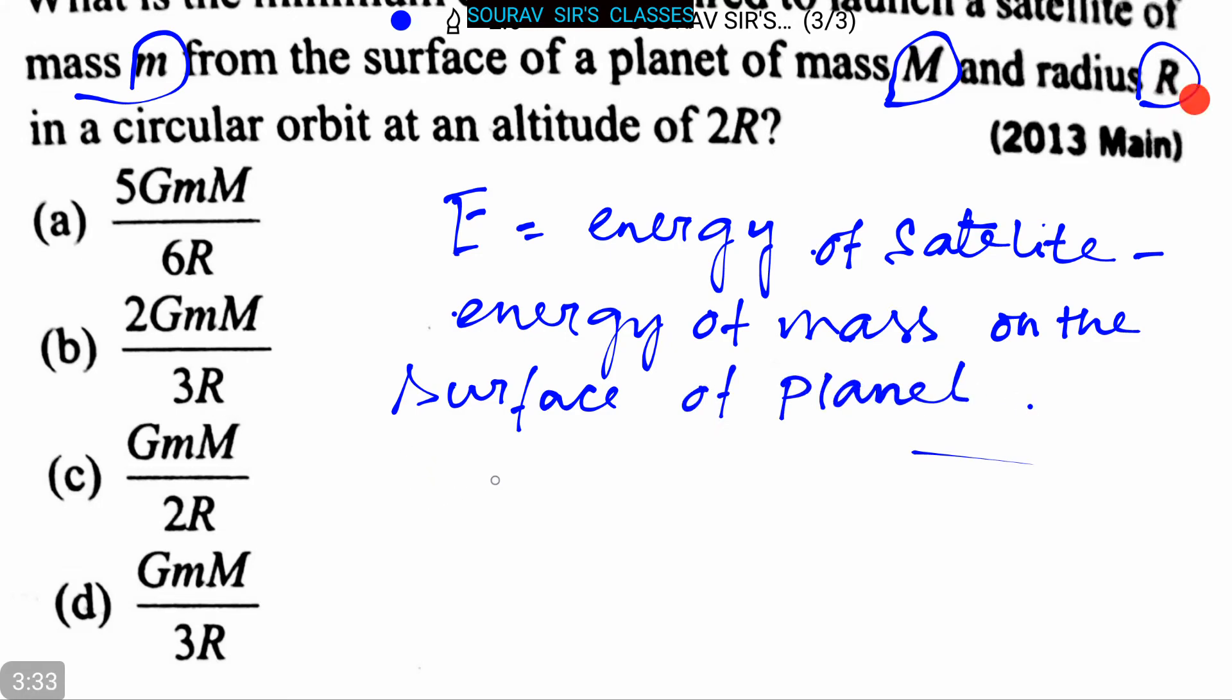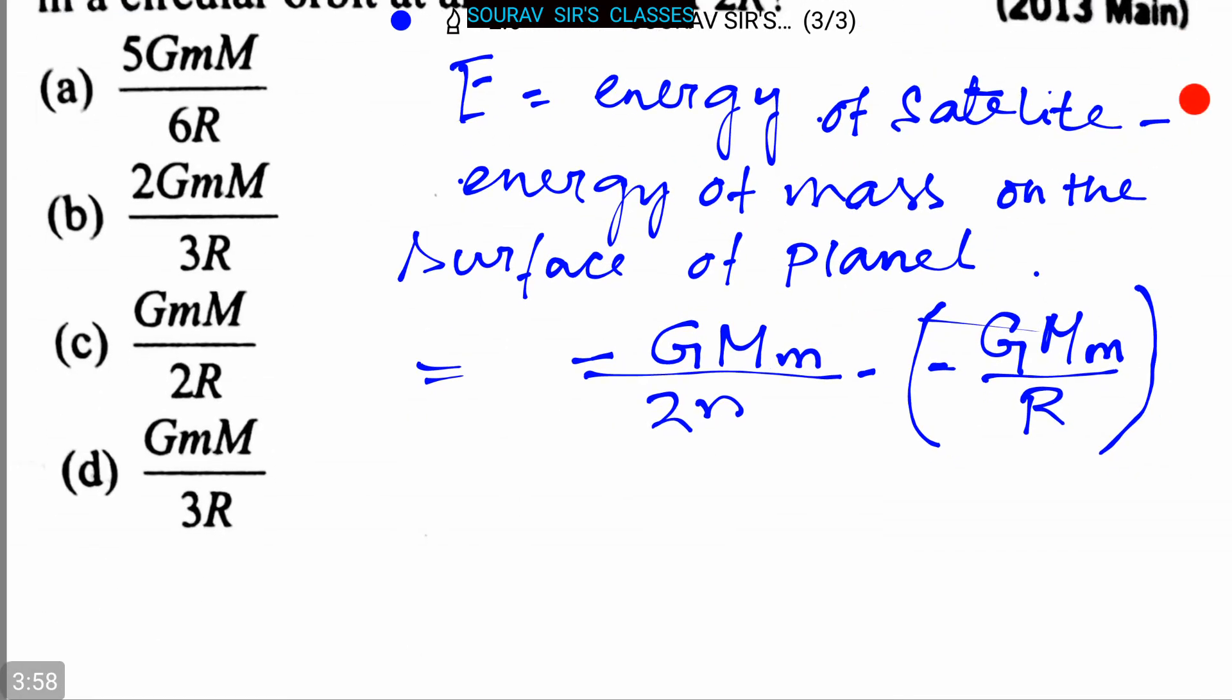That is equal to -GMm divided by 2R minus -GMm divided by R. We can rewrite this as